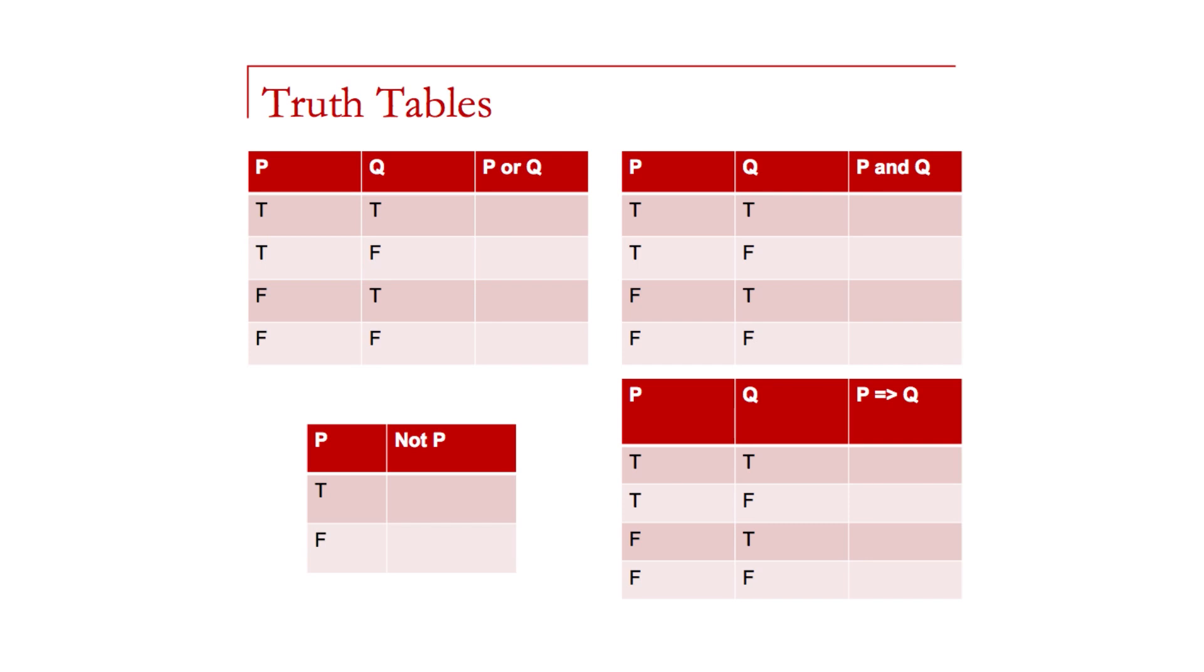It's the opposite with AND. The only time that p and q is true is when both of the operands are true. So the first line of p and q is true and all the others are false. Because as long as one of them is false, the entire expression is false. And then negating or notting a value, true becomes false and false becomes true.